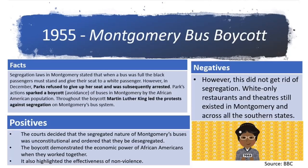Our next important event is the Montgomery Bus Boycott. In this well-known event, Rosa Parks refused to give up her seat. She was subsequently arrested and this led to the boycott of Montgomery buses. The non-violent protest was highly successful and Montgomery buses were desegregated. Though this was good progress, there was still a long way to go.